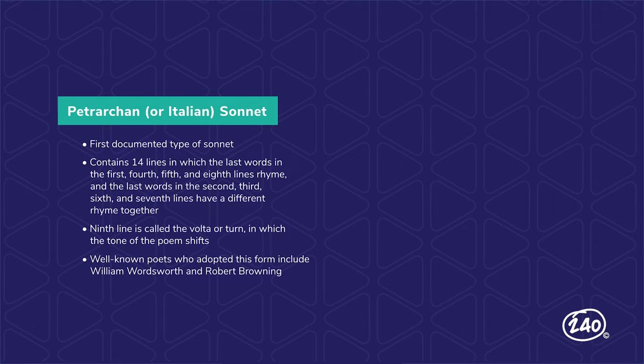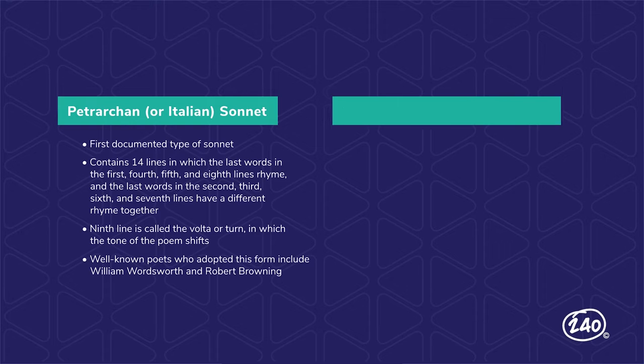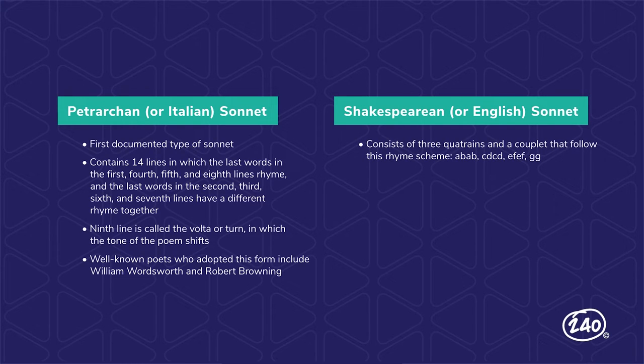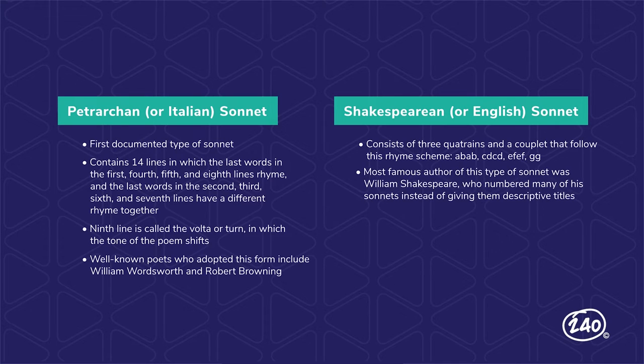Later well-known poets who adopted this form include William Wordsworth and Robert Browning. You've probably heard of Shakespearean, or English, sonnets. This form consists of three quatrains and a couplet that follow the rhyme scheme A-B-A-B, C-D-C-D, E-F-E-F, G-G. The most famous author of this type of sonnet was William Shakespeare, who numbered many of his sonnets instead of giving them descriptive titles. Who doesn't love Sonnet 18? 'Shall I compare thee to a summer's day?' Shakespeare is saying you're even lovelier than that — beautiful stuff.